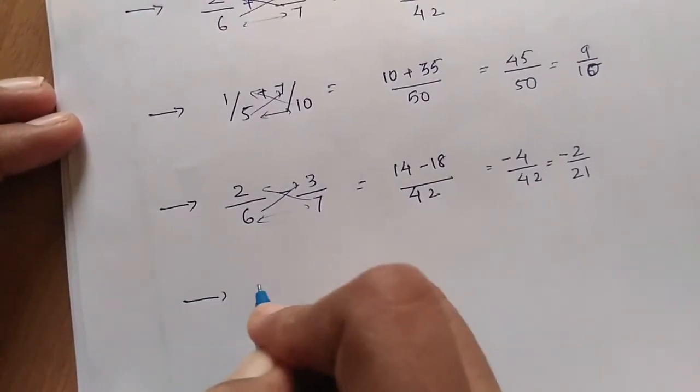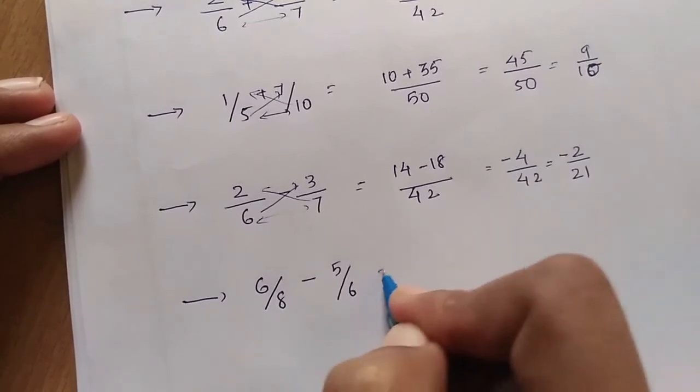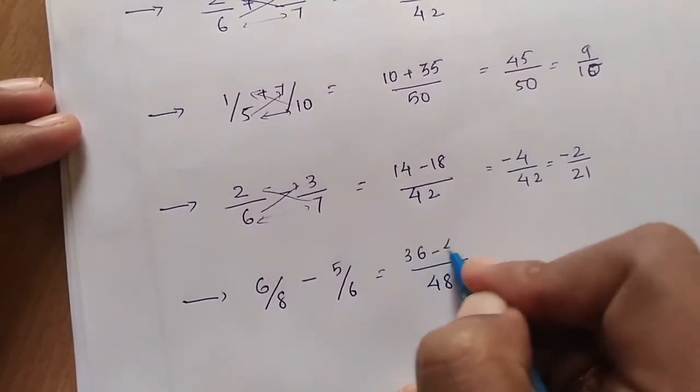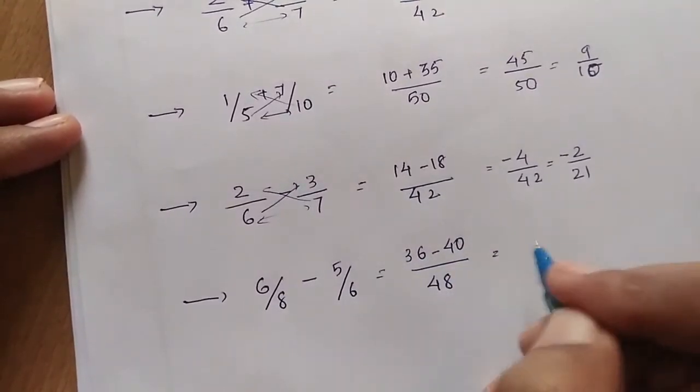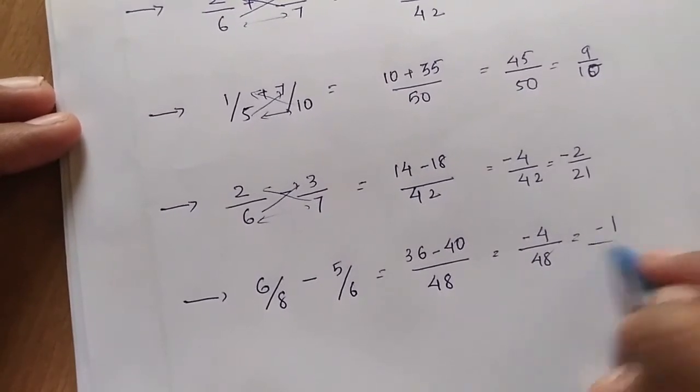Another one: 6/8 minus 5/6. Multiply denominators: 48. Cross multiply: 36 minus 40 which equals minus 4/48. You can simplify it as minus 1/12.